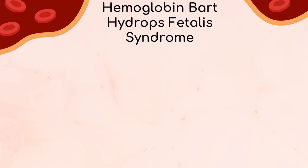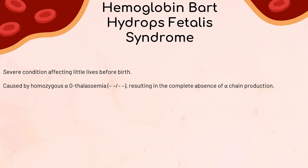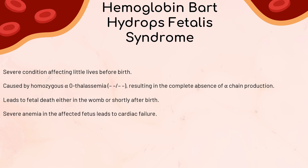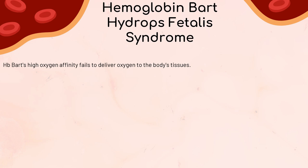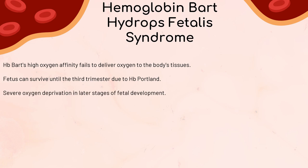Hemoglobin BART hydrops fetalis syndrome is caused by homozygous alpha-0 thalassemia, resulting in the complete absence of alpha-chain production. This condition leads to fetal death either in the womb or shortly after birth. The fetus suffers from severe anemia, causing cardiac failure and accumulation of fluid in fetal subcutaneous tissues — a condition known as hydrops fetalis. The predominant hemoglobin is hemoglobin BART (gamma-4), along with a small amount of hemoglobin Portland (zeta-2-gamma-2) and traces of hemoglobin H. Hemoglobin BART has a very high affinity for oxygen and fails to deliver oxygen to tissues. Although the fetus can survive until the third trimester due to hemoglobin Portland, this hemoglobin cannot sustain later fetal development, resulting in severe oxygen deprivation.